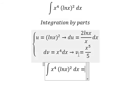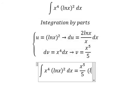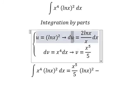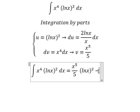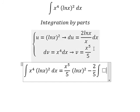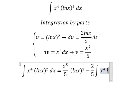So we have u multiplied by v minus we have du multiplied by v. So we have 2 over 5, and we have the integration x to the power of 5 divided by x. You get x to the power of 4 ln x dx.